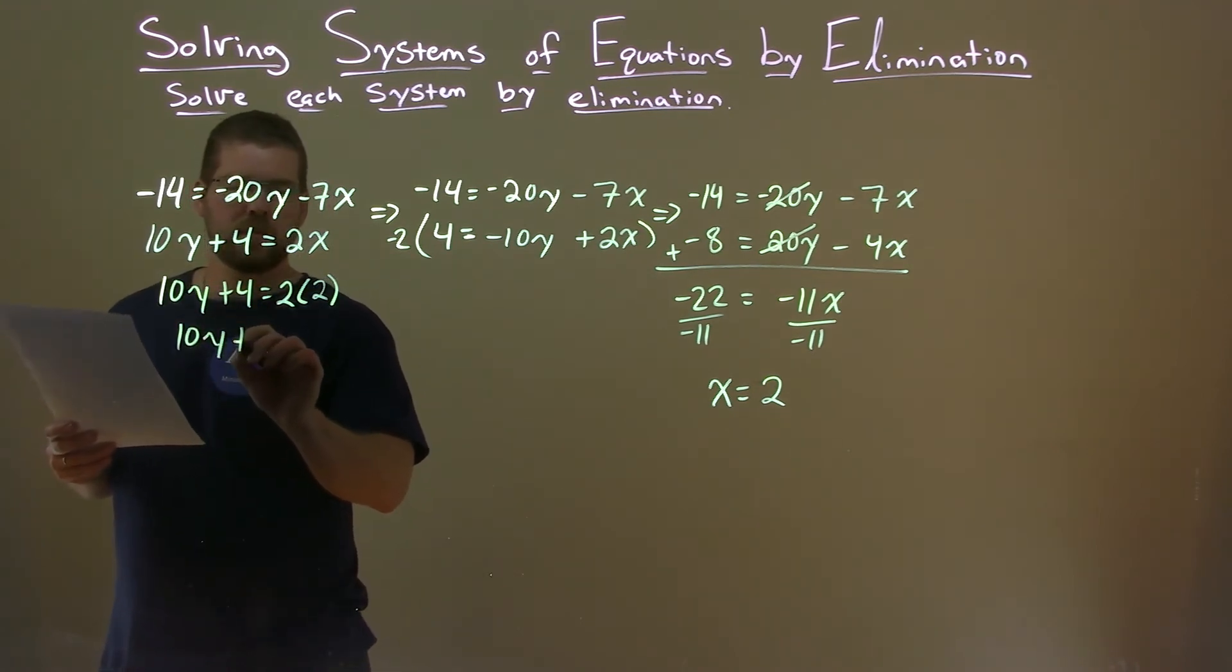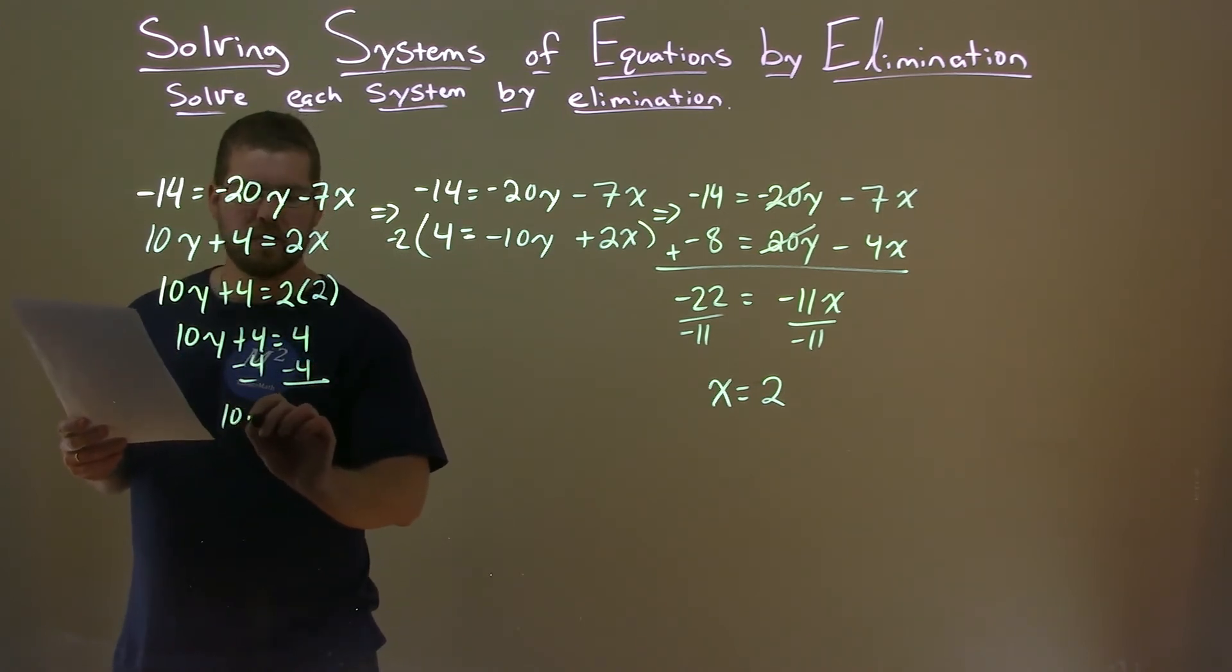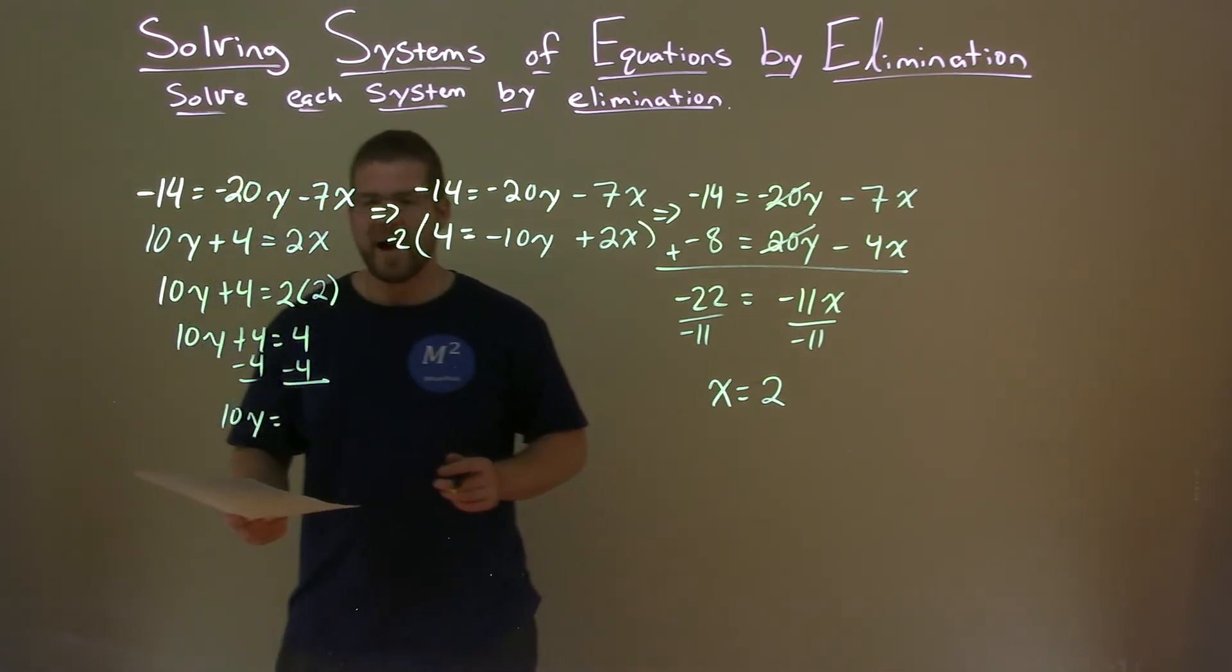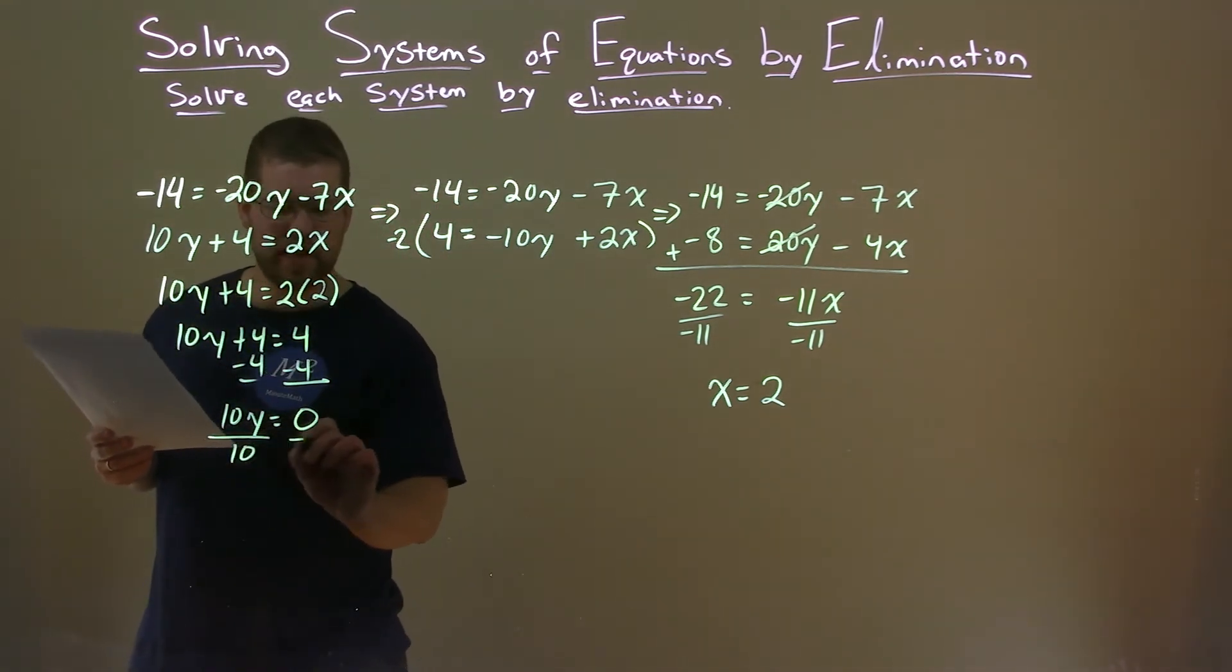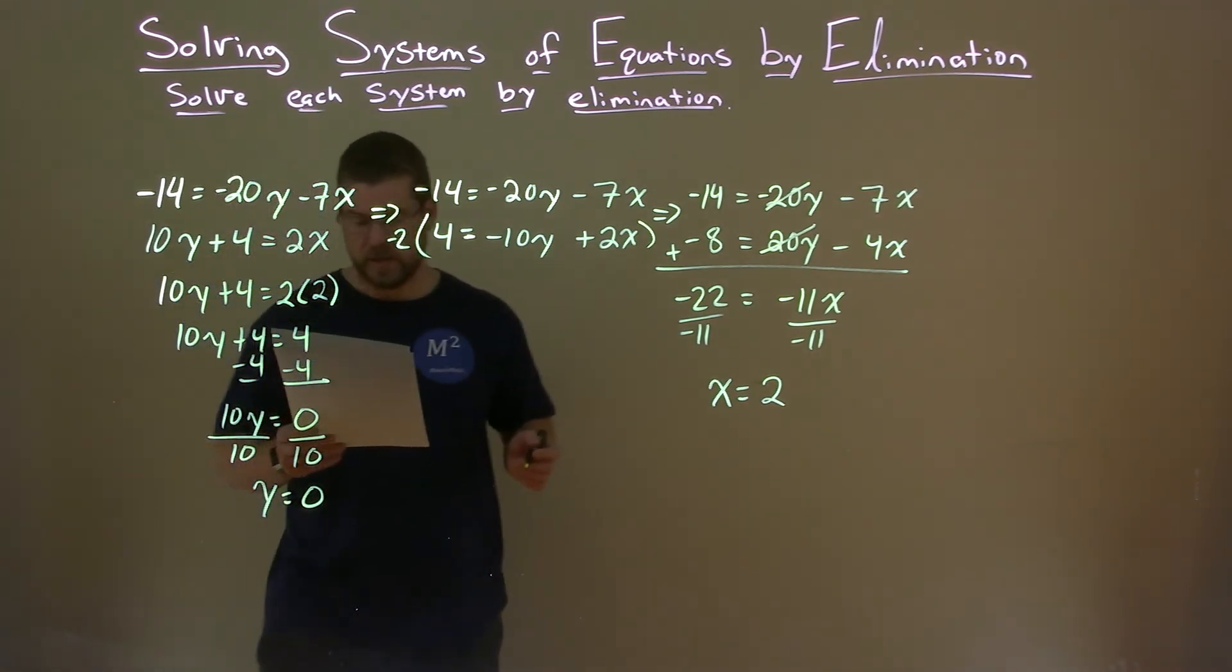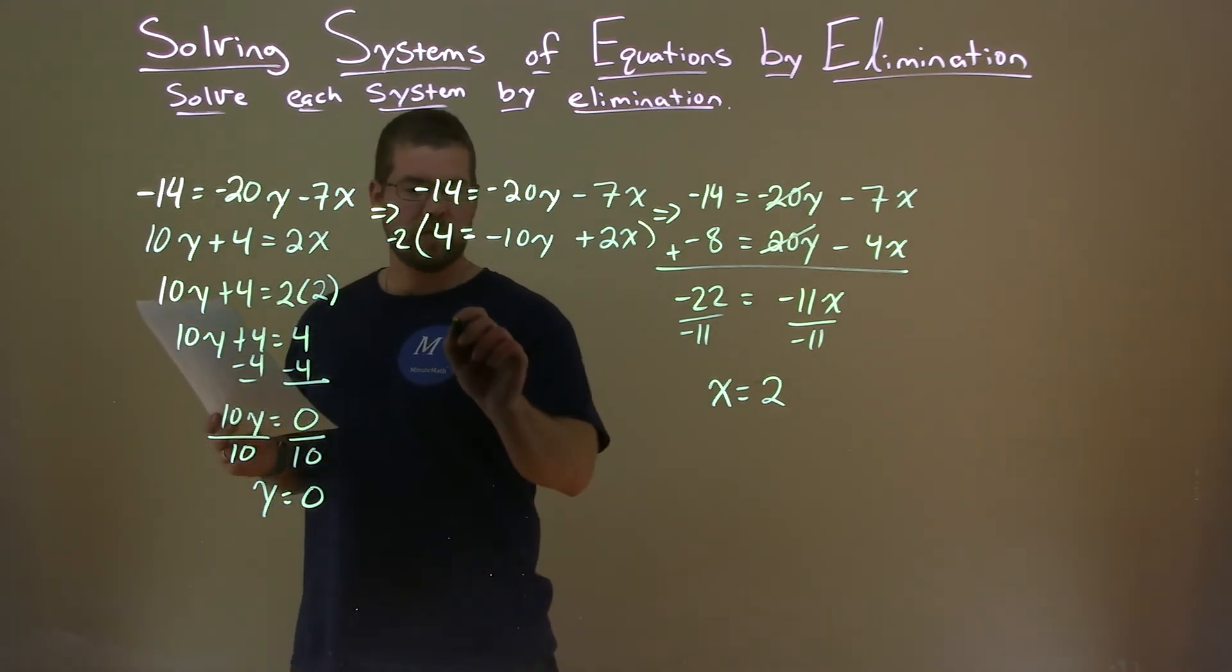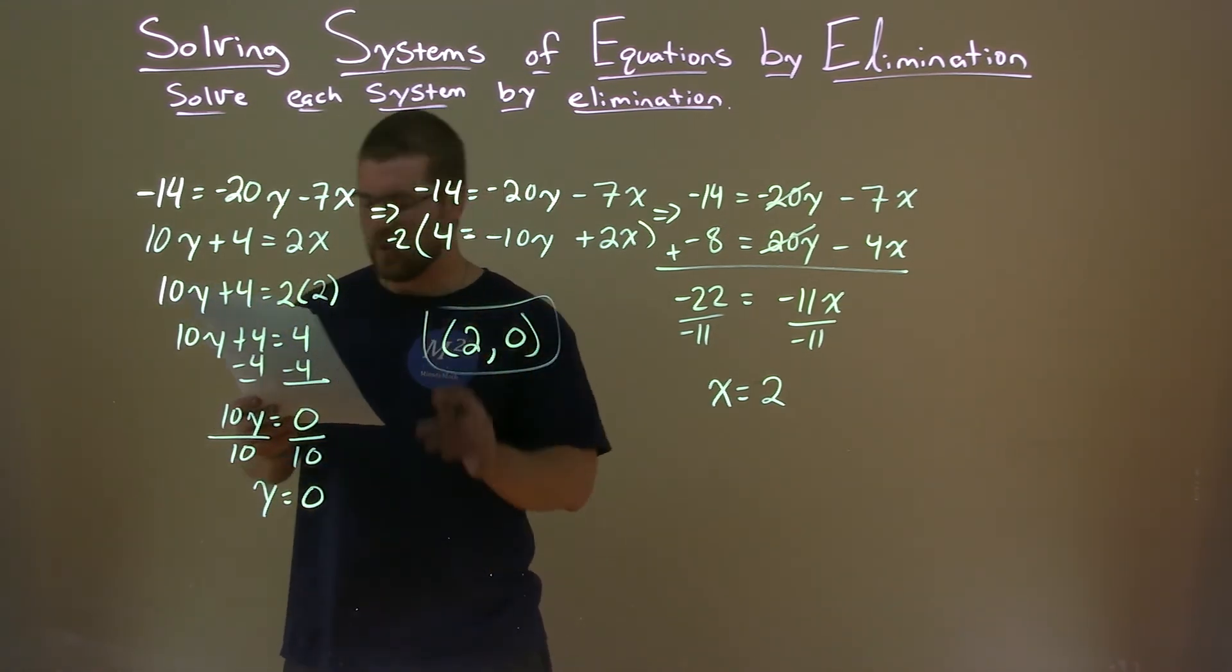10y plus 4 equals 2 times 2, 4. Subtract the 4 to both sides, and 10y is by itself here. And 4 minus 4 is 0. Divide both sides by 10. That's the opposite of multiplication. 0 divided by 10 is 0. So, y is 0 here. Combine the two parts. Our final answer is 2 comma 0, and that is our coordinate point.